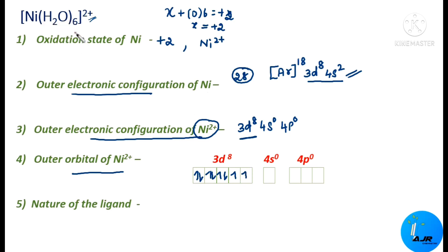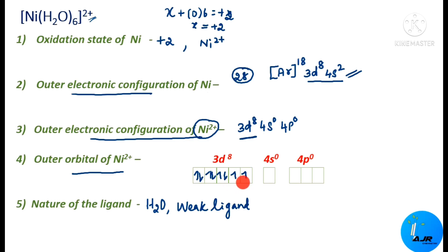The reason for the green color: the ligand is H₂O, which is a weak field ligand. A weak ligand will not force the electrons to get paired up, so these electrons remain unpaired. Since those unpaired electrons undergo d-d transition — absorbing sunlight and transitioning from one orbital to another — this complex absorbs red light. Because of this absorption of red light, the complex shows a green color.